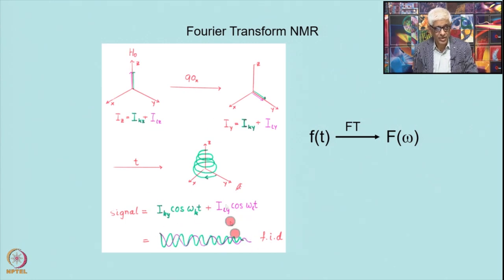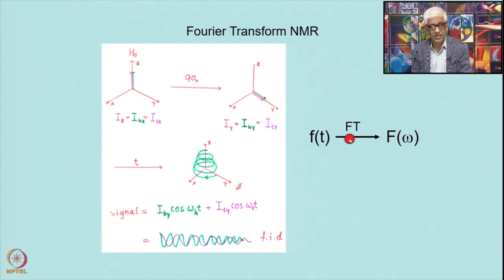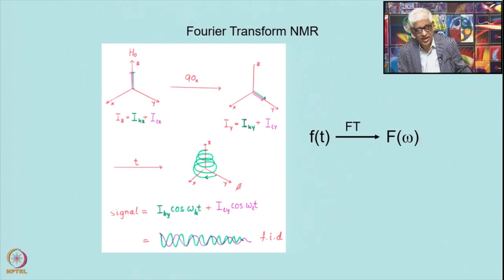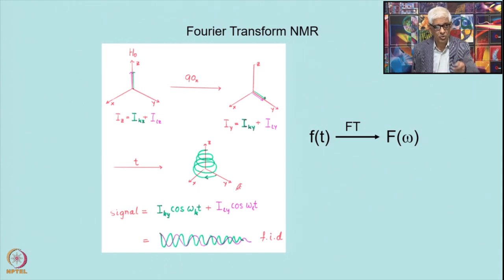If we Fourier transform this signal, we get the individual frequencies F(omega), because the superposition means it is a Fourier transform of the spectrum. So by doing a Fourier transform of the time-dependent FID signal, we get the frequency domain spectrum. Initially we excited a large number of frequencies, but the detection process picks up only those which correspond to lines in the NMR spectrum. This is therefore called Fourier transform NMR.